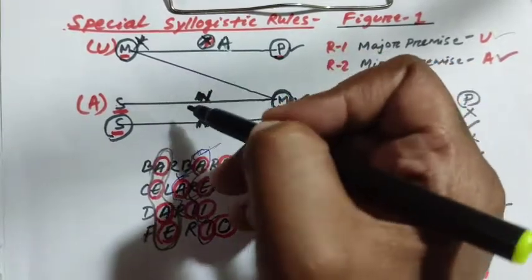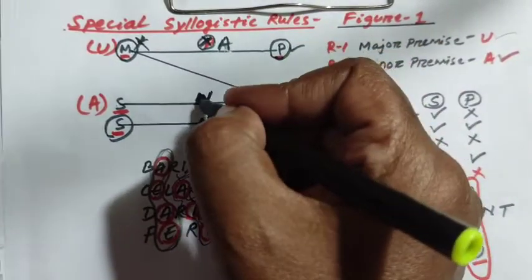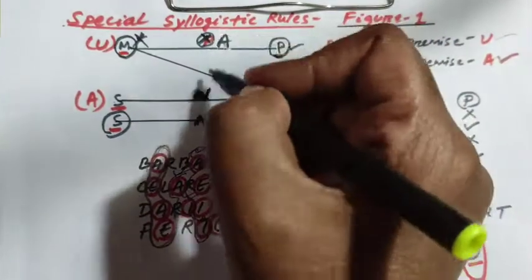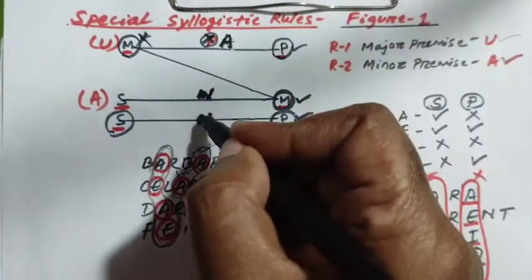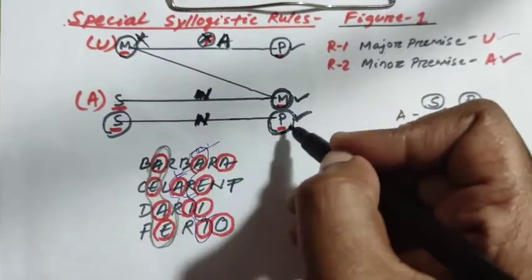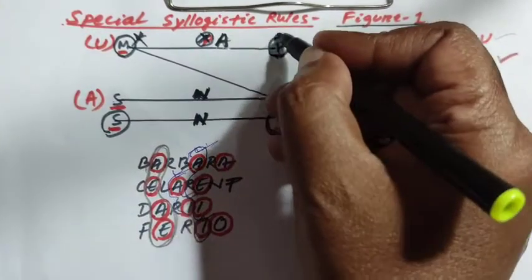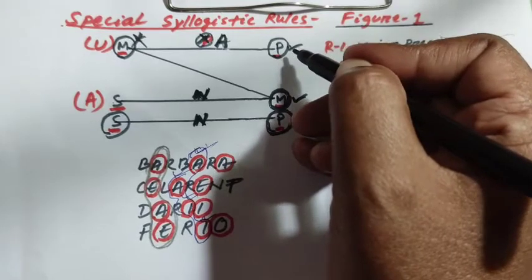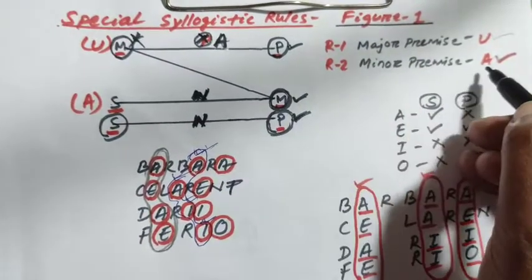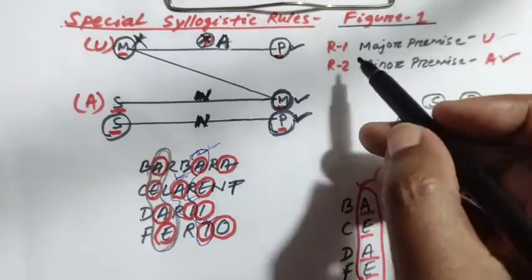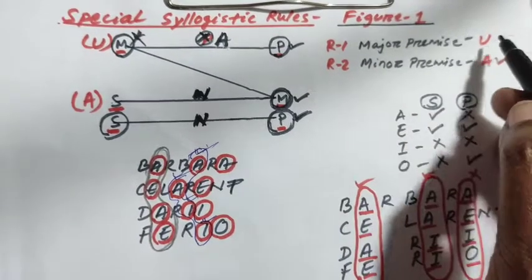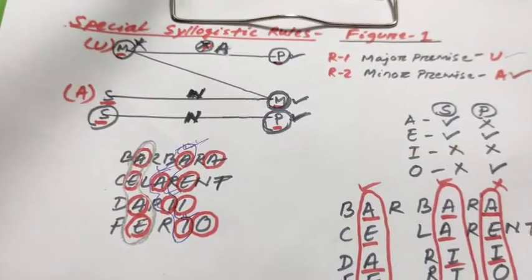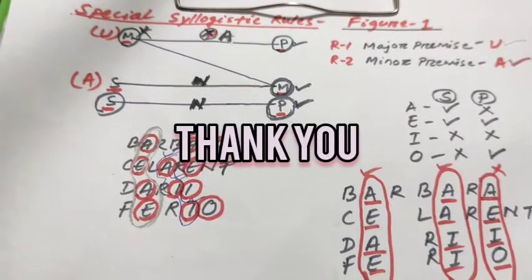This is the minor premise and this is the major premise. If the minor premise is negative, then the major premise must also be considered. From two negative premises no conclusion can be drawn. Negative propositions distribute their predicate. Affirmative propositions do not distribute their predicate. If we ignore this, it gives rise to the fallacy of illicit major. That means the minor premise must be affirmative. So here I have proved Rule 1 and Rule 2 of Figure 1: the major premise must be universal and the minor premise must be affirmative. In the next class, I will discuss the rules of Figure 2. Thank you.